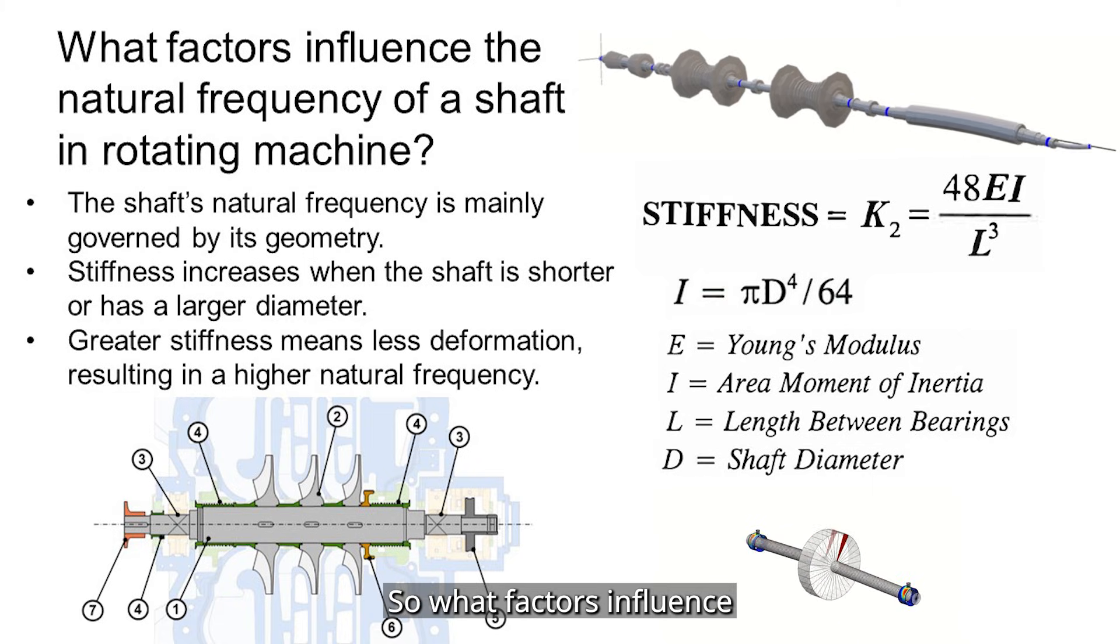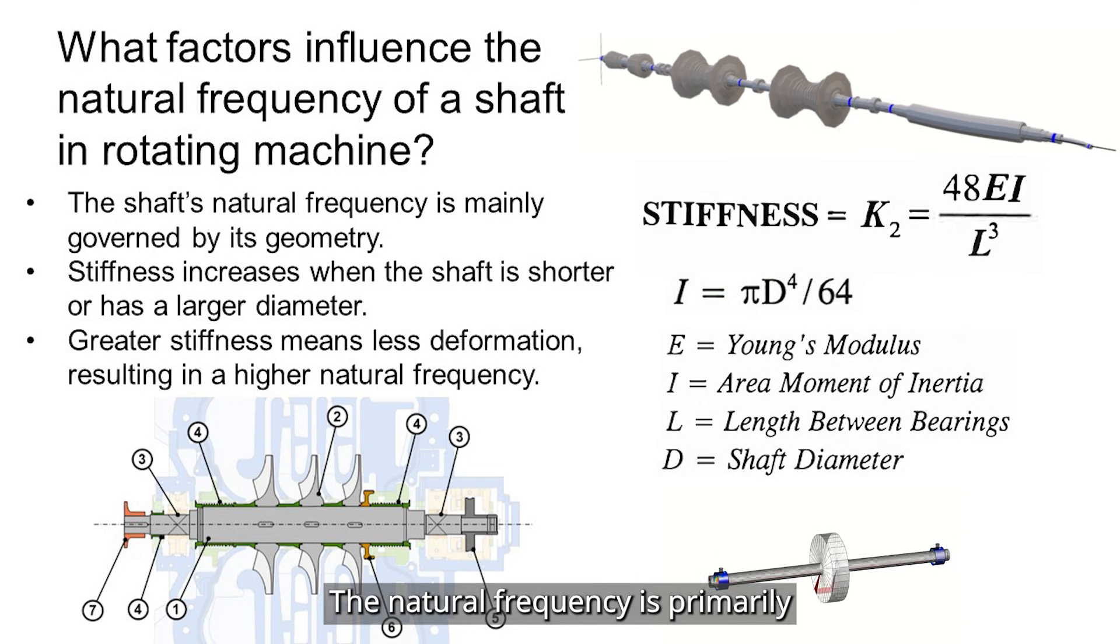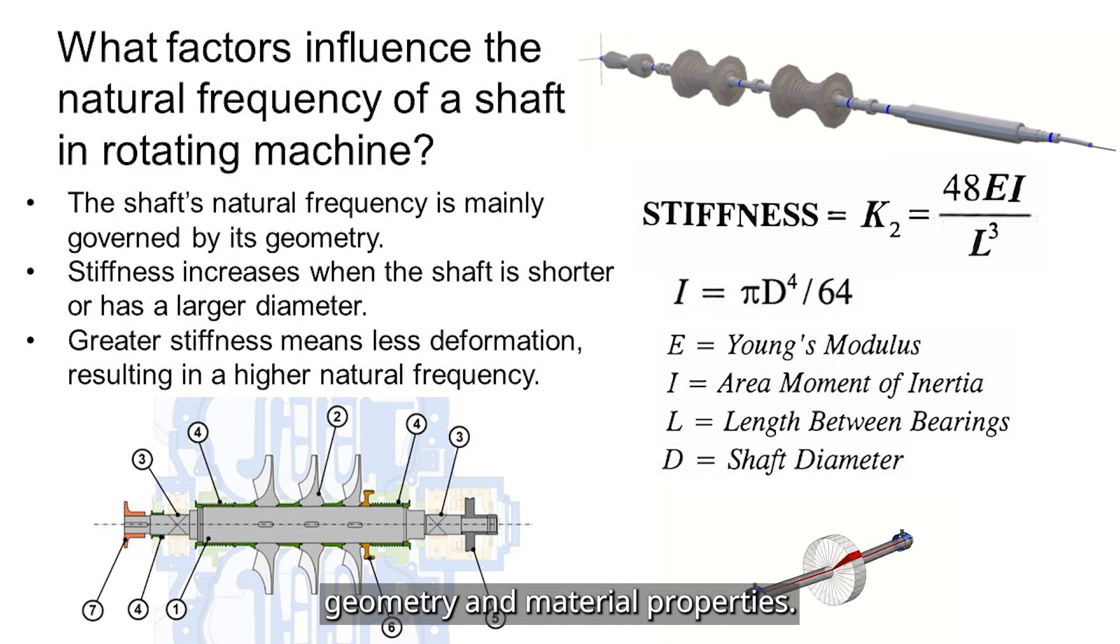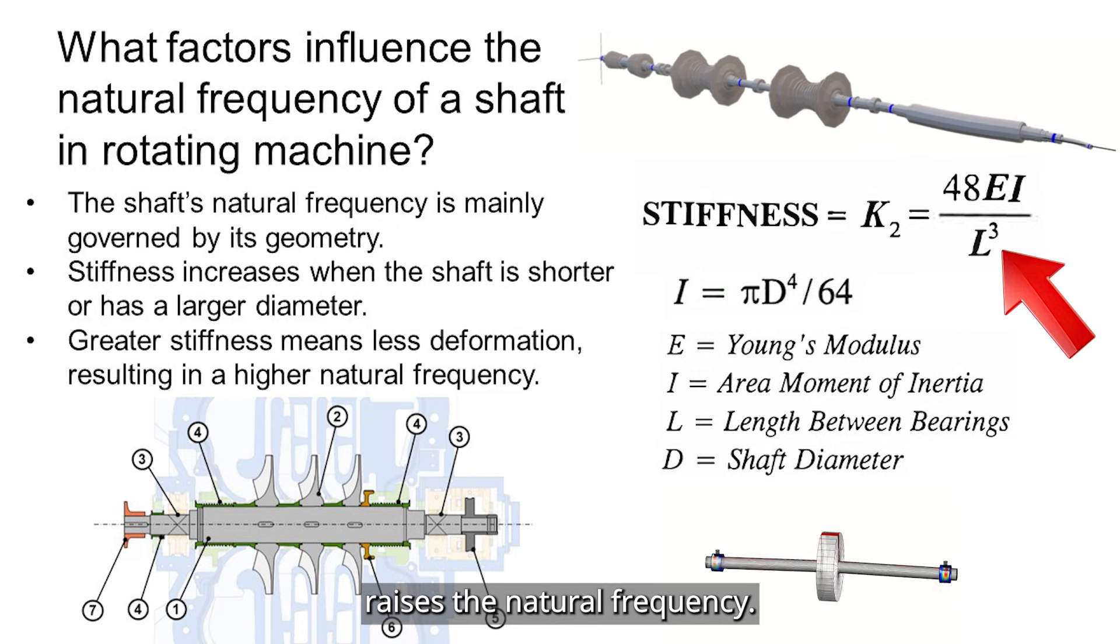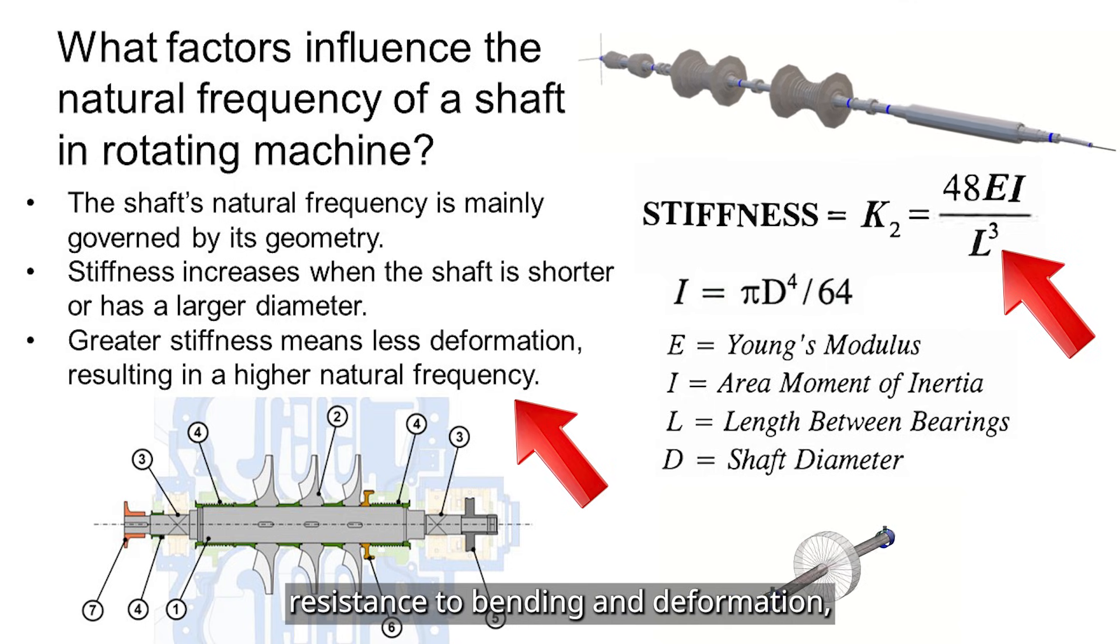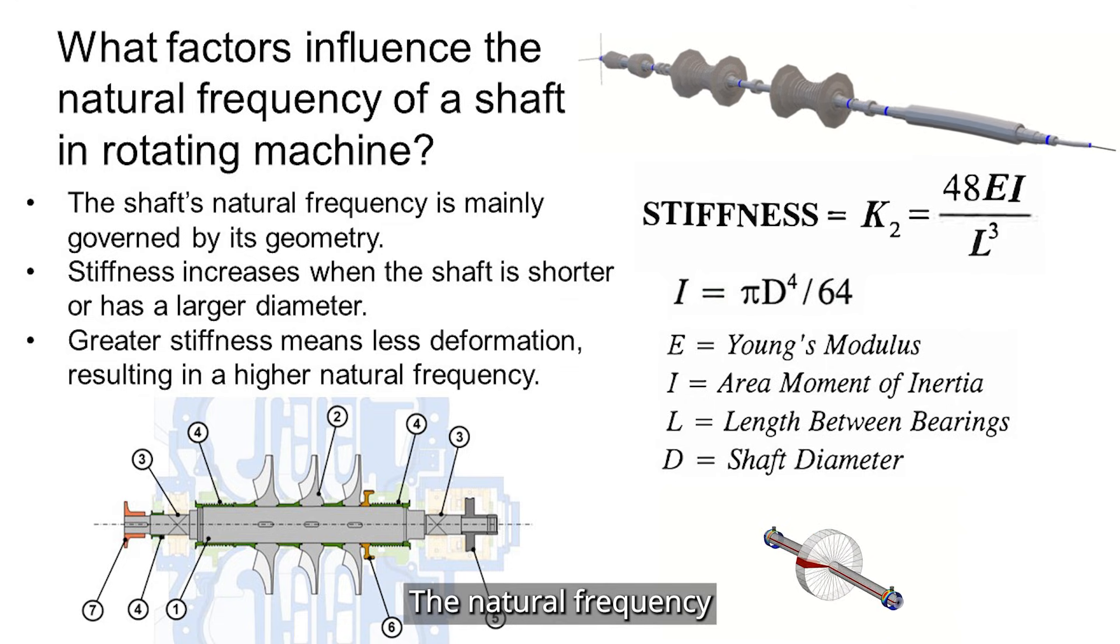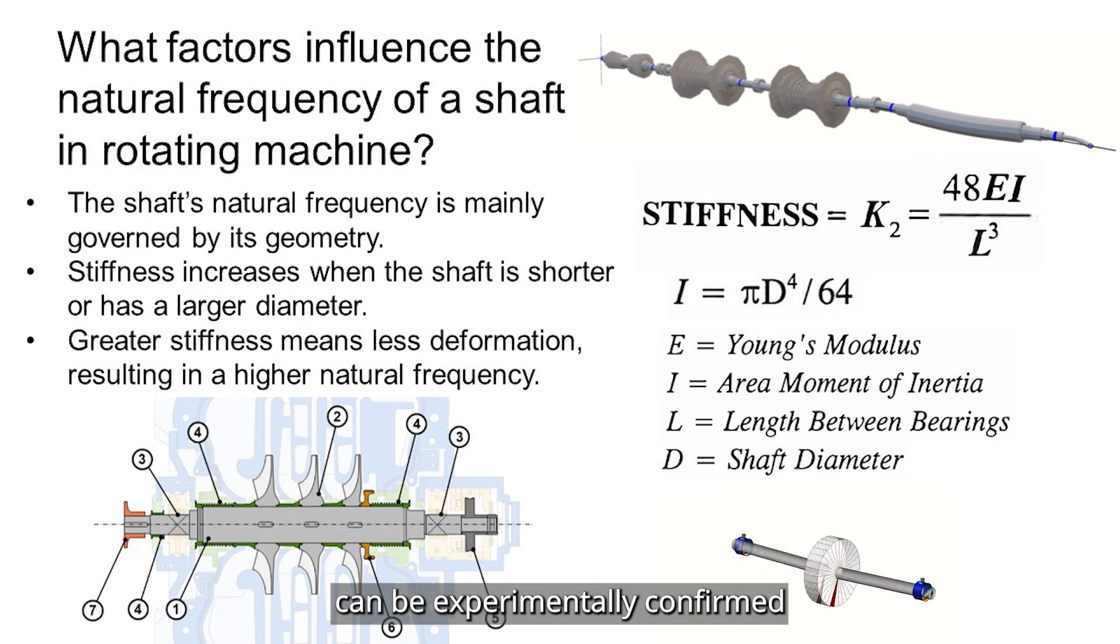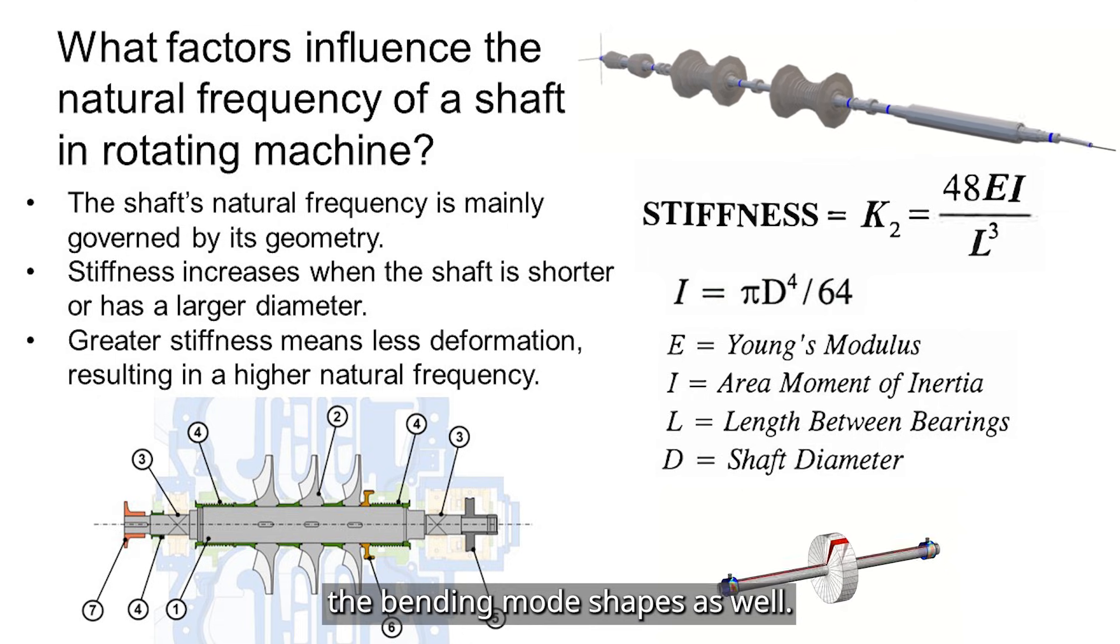So, what factors influence the natural frequency of a shaft in a rotating machine? The natural frequency is primarily governed by the shaft geometry and material properties. From the governing equation, we can see that increasing shaft stiffness, by either shortening its length or increasing its diameter, raises the natural frequency. These changes improve the shaft resistance to bending and deformation, enabling it to operate more stably at higher speed. The natural frequency of the shaft or rotor can be experimentally confirmed through impact testing, and the impact test can help to identify the bending mode shapes as well.